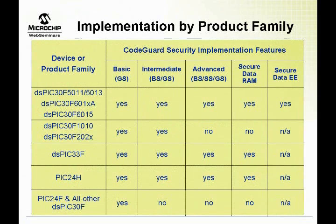This slide shows the CodeGuard security implementation specific to various devices in Microchip's 16-bit controller families. The capability to divide memory into multiple segments is offered in the intermediate and advanced implementations of CodeGuard security. This means that the PIC24H, DSPIC33F, and some devices in the DSPIC30F family feature segmenting memory into multiple segments.